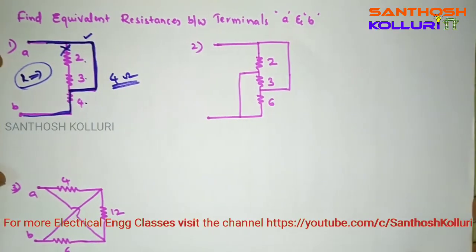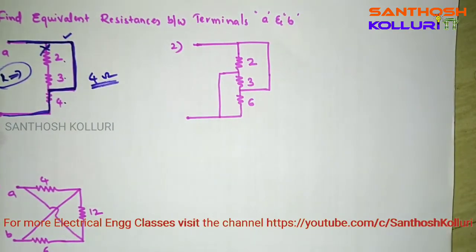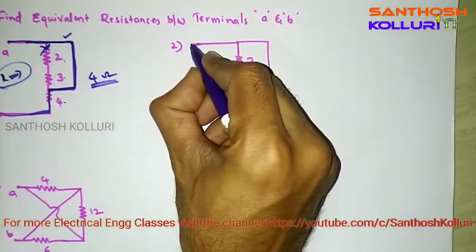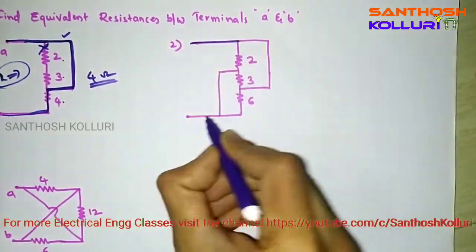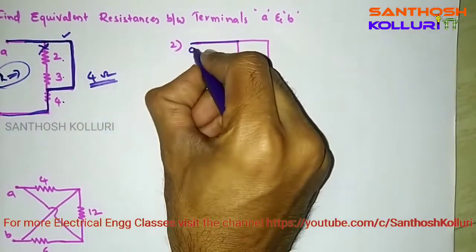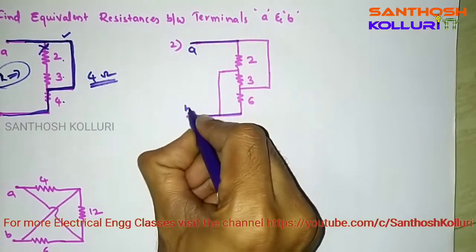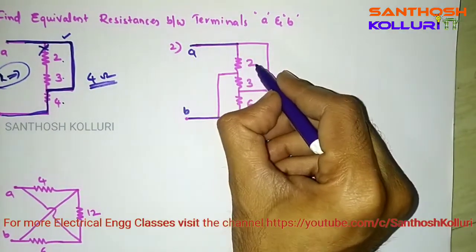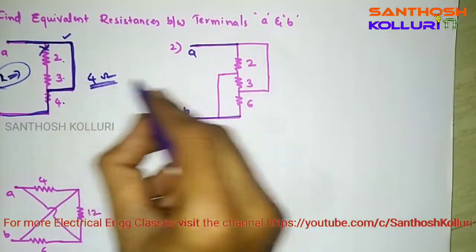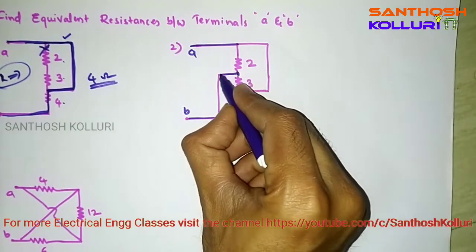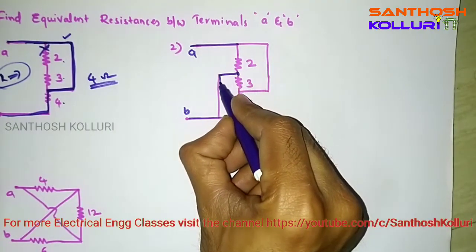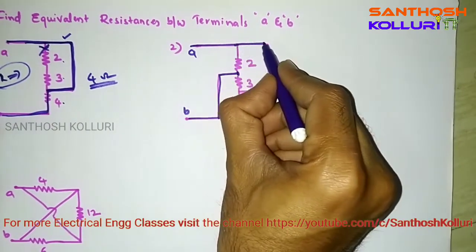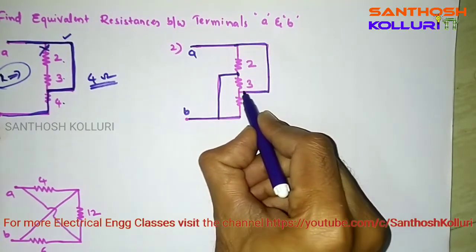Coming to the second question, we are having this type of circuit and these are the two terminals A and B. We cannot solve it as in the previous case because here from terminal 2 to terminal B there is one short circuit path, and there is another short circuit path as well.